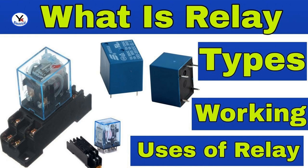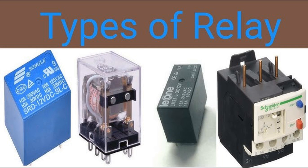Disadvantages: Slow response time — compared to other protection devices like electronic relays, thermal relays may have a slower response to sudden overloads. Temperature sensitivity — they may be affected by ambient temperature conditions, which can influence their operation. Limited sensitivity — thermal relays may not detect short-duration overloads effectively, potentially allowing damage to occur. Applications: Motor protection — commonly used in electric motors to prevent damage from overcurrent situations. HVAC systems — employed in heating, ventilation, and air conditioning systems to protect compressors and other components.